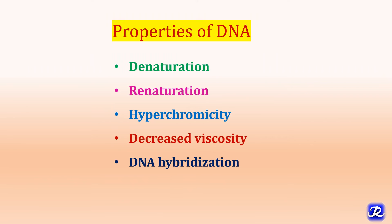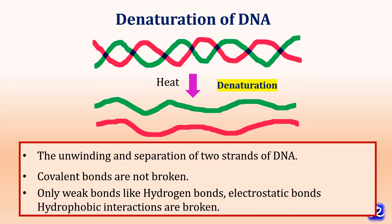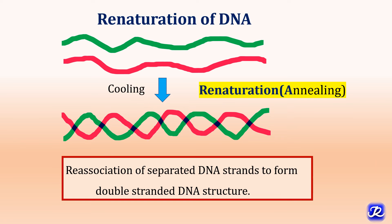Now let's learn about the properties of DNA: denaturation, renaturation, hyperchromicity, decreased viscosity, and DNA hybridization. Denaturation is the unwinding and separation of the two strands of DNA, occurring due to heat or denaturing agents. In denaturation, covalent bonds are not broken — only weak bonds like hydrogen bonds, electrostatic bonds, and hydrophobic interactions are broken. The separated strands of DNA on cooling undergo renaturation, also called annealing, where reassociation of separated strands occurs to reform the double-stranded DNA structure. This denaturation and renaturation property of DNA is useful in polymerase chain reactions.